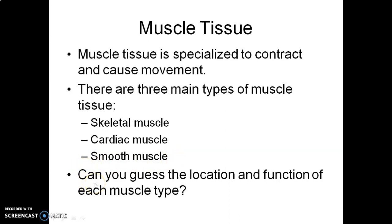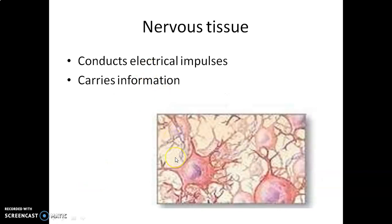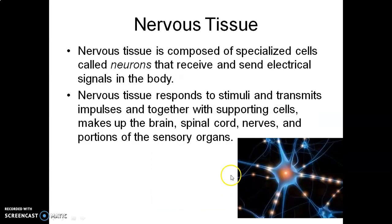Consider the location and functions of each type of muscle. Nervous tissue is the last type. It conducts electrical impulses and carries information. Neurons and neuroglia belong to this category. Nervous tissue is composed of specialized cells called neurons that receive and send electrical signals in the body. Nervous tissue responds to stimuli and transmits impulses. Supporting cells make up the brain, spinal cord, and portions of the sensory organs.